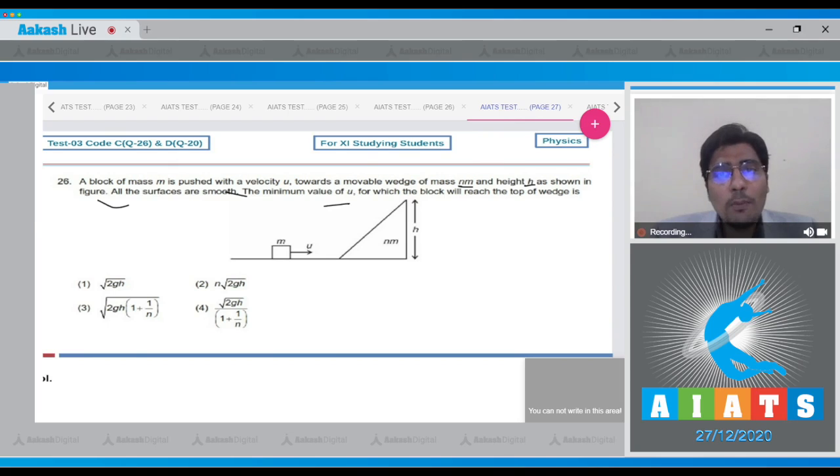The minimum value of u for which the block will reach the top of the wedge is. Dear student, let the velocity of the system when the block reaches the top of the inclined be v. So we can use the conservation of linear momentum and write down that mu will be equal to m plus nm into v, which means that v will be equal to mu by m plus nm, or u by 1 plus n.